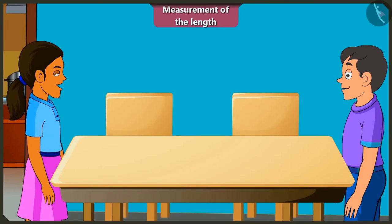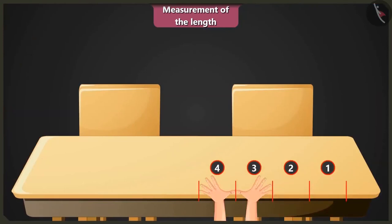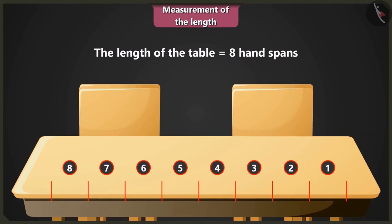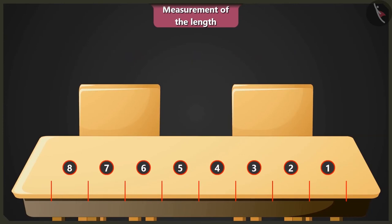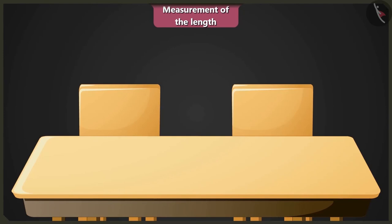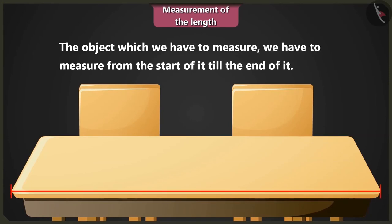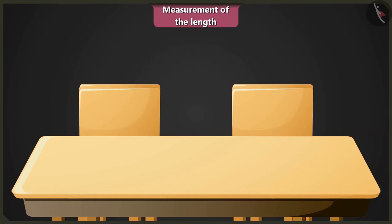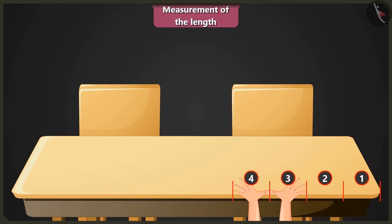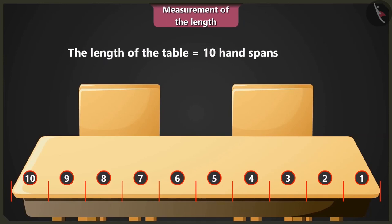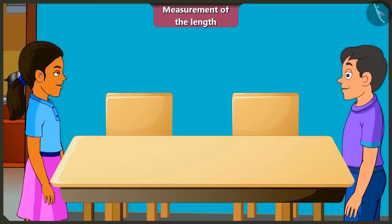Hey Gotu, are you measuring the length of the dining table? Yes, 1, 2, 3, 4, 5, 6, 7 and 8. The length of this table is equal to 8 handspans of my palm. Gotu, that is not how you take the measurement. When you have to measure the length of an object, you measure from one end to another end of it. You have to measure the length of this table from here till here. Then 1, 2, 3, 4, 5, 6, 7, 8, 9 and 10. The length of this table is equal to 10 handspans of my palm. This is the correct measurement.